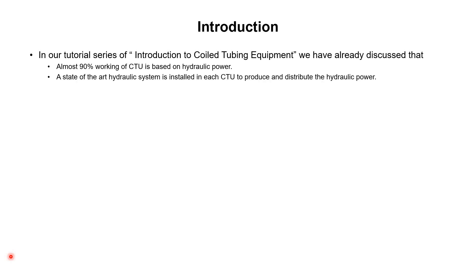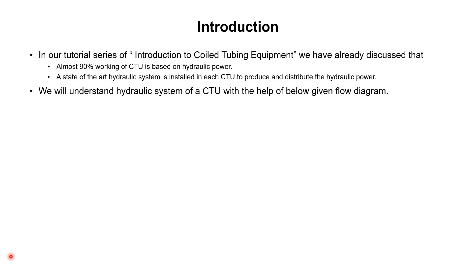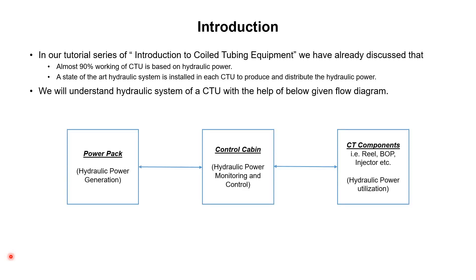To produce and distribute the required hydraulic power, a state-of-the-art hydraulic system is installed in each and every coil tubing unit. No matter which company's unit you are using, it will have a fully established, fully developed, and fully integrated hydraulic system. To understand the hydraulic system of any coil tubing unit, we can take the help of this flow diagram. We can divide the coil tubing unit into three sections to understand it.